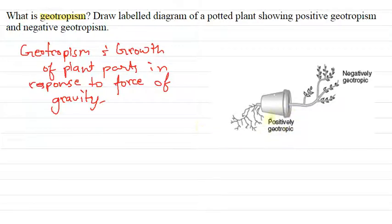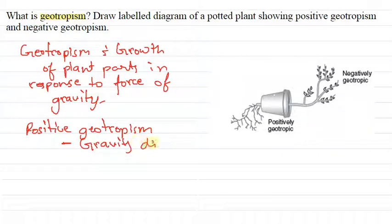Now let's talk about positive geotropism. Positive geotropism means that the growth is in the direction of gravity.